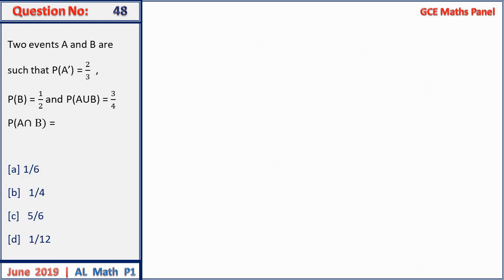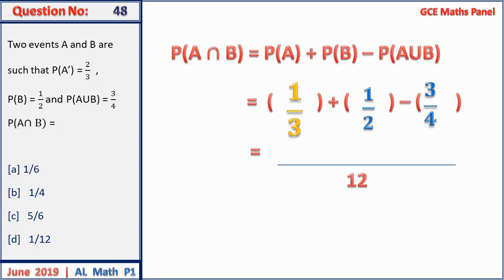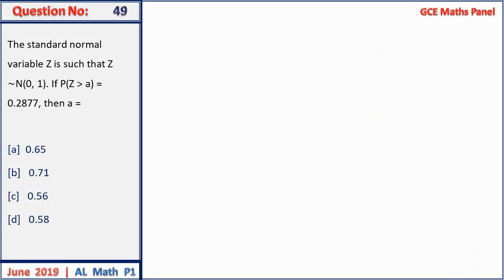Question 48: P(A′) = 2/3, so P(A) = 1/3; P(B) = 1/2; P(A ∪ B) = 3/4. Find P(A ∩ B). Using P(A ∩ B) = P(A) + P(B) − P(A ∪ B): with LCM 12, that gives 4/12 + 6/12 − 9/12 = 1/12. Answer D.